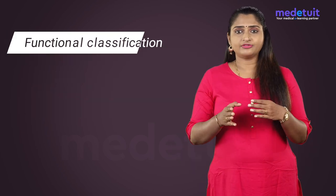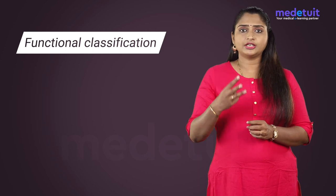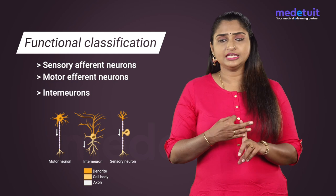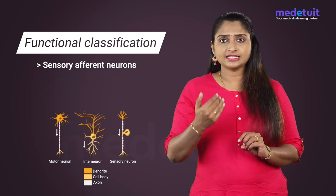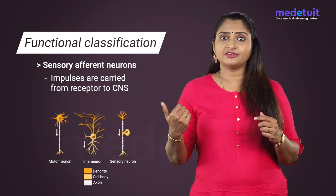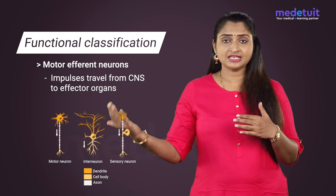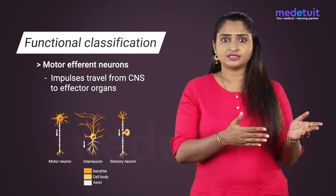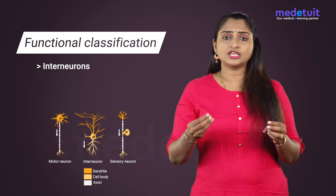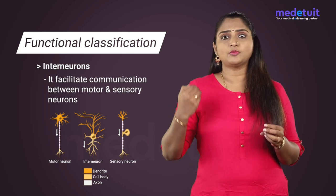Now let us classify neurons according to function. According to function they are divided into three: sensory afferent neurons, motor efferent neurons, and interneurons. In sensory afferent neurons, impulses are carried from the receptor to the central nervous system. In motor efferent neurons, impulses travel from the central nervous system to the effector organs. Interneurons are otherwise called association neurons and they facilitate communication between the sensory and motor neurons.